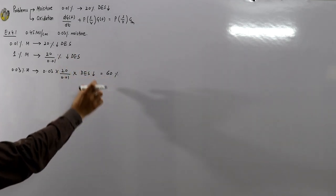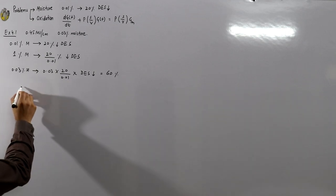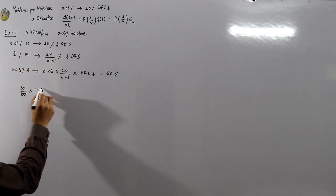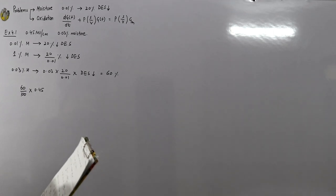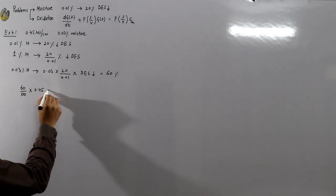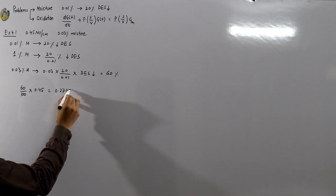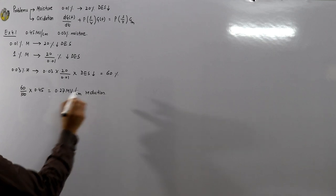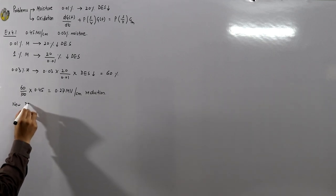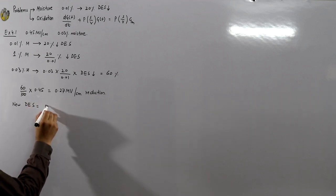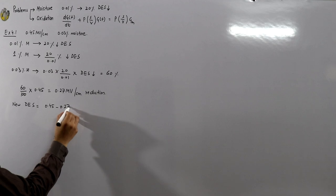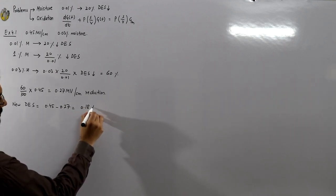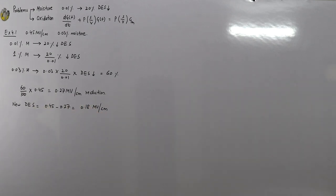A 60% reduction will occur. 60% of 0.45 megavolt per centimeter is 0.27 megavolt per centimeter — that is the reduction. The new dielectric strength is 0.45 minus 0.27, which equals 0.18 megavolt per centimeter.